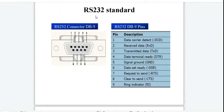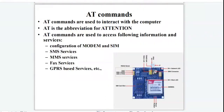GSM uses the RS232 standard or protocol to communicate with computers. This is the RS232 DB9 connector. Pin number 2 is Received Data and pin number 3 is Transmitted Data. GSM also uses AT commands to interact with the computer. AT is the abbreviation for attention. AT commands are used to access the following information and services.